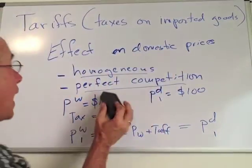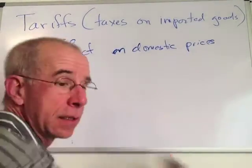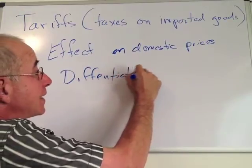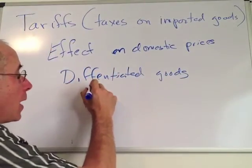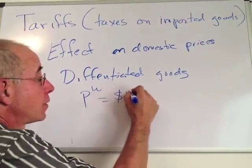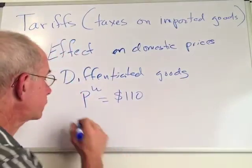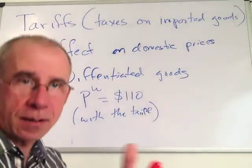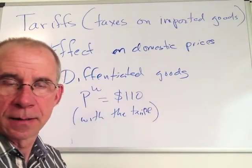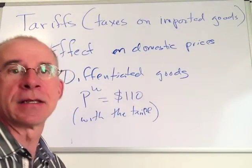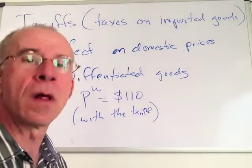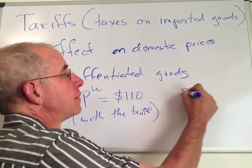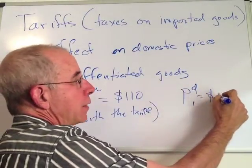It's worth thinking about what would happen with a differentiated good — where foreign goods and domestic goods are not exactly the same. The price of the imported goods is still $110 including the tariff. The domestic firm can say: I've got a slightly different product. The foreigners are charging $110, so I'll charge slightly less than that. For example, if the foreign goods are higher quality — say a Mercedes versus a Chrysler — maybe in the domestic market you would now charge $108.